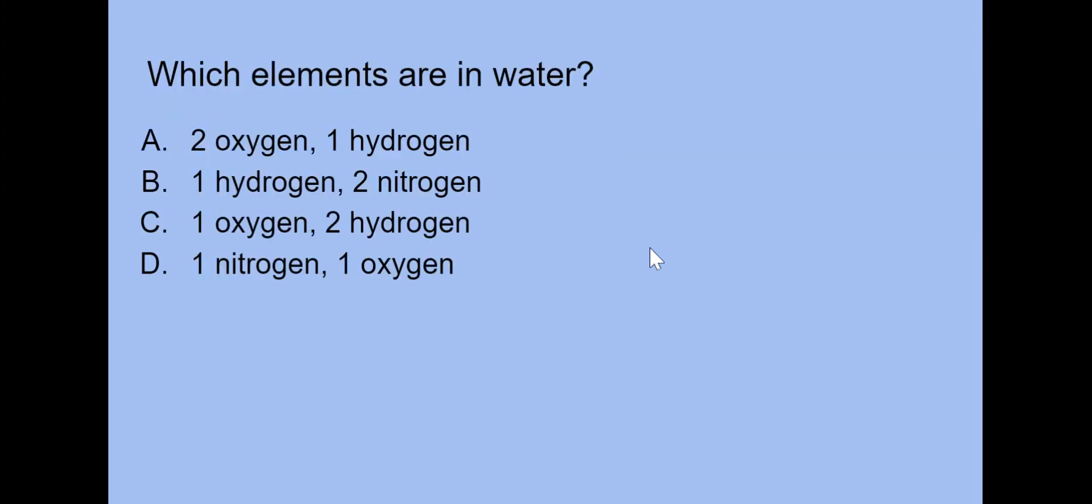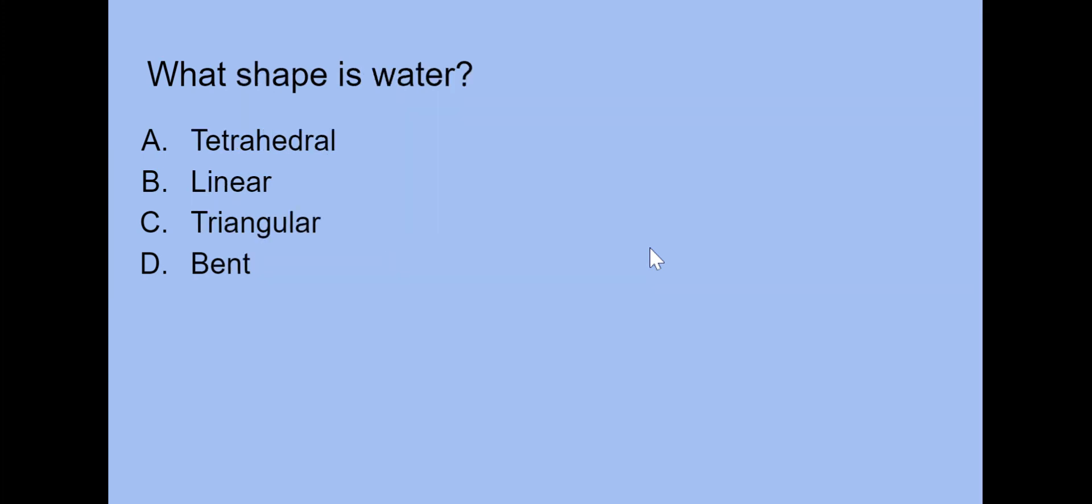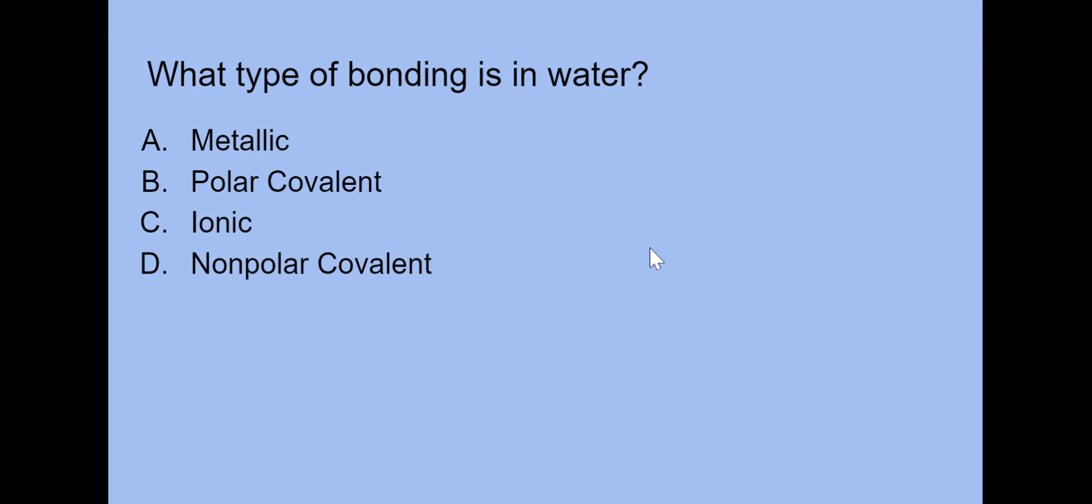First, which elements are in water? Is it A, two oxygen one hydrogen; B, one hydrogen two nitrogen; C, one oxygen two hydrogen; or D, one nitrogen one oxygen? This one is answer choice C. It's actually one oxygen with two hydrogen, so it's called H2O. What type of bonding is in water? Is it metallic, polar covalent, ionic, or nonpolar covalent? This one's polar covalent, answer choice B here.